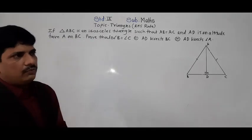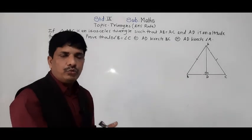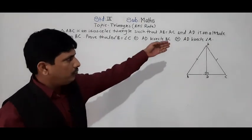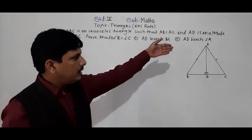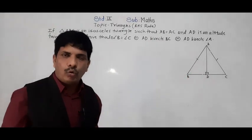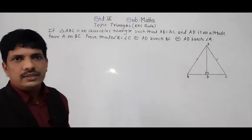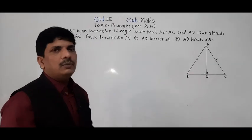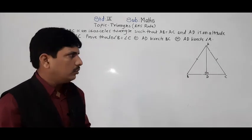These three results we will get after showing both triangles are congruent. If we are able to show triangle ADB and triangle ADC are congruent, then all three answers we will get. Both the triangles are congruent.